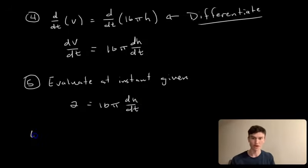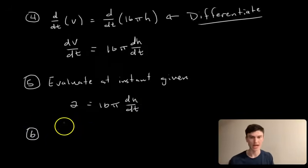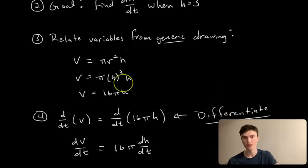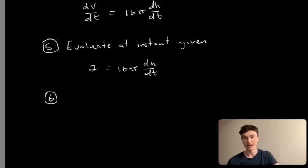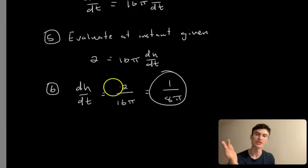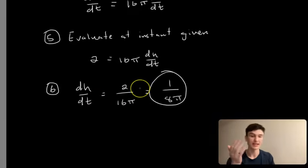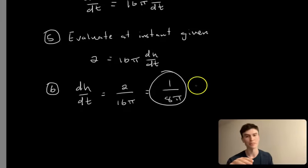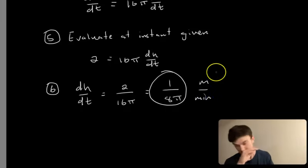Step 6 is to solve — isolate what you're trying to find, which from step 2 is dh/dt. After isolating and simplifying, the rate of change of the water level with respect to time is 1/(8π) meters per minute. That's your answer.